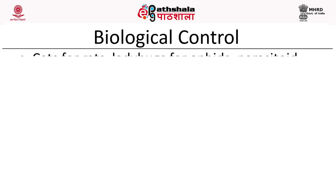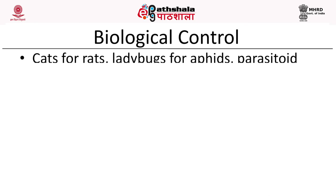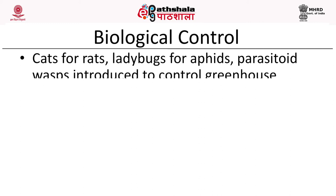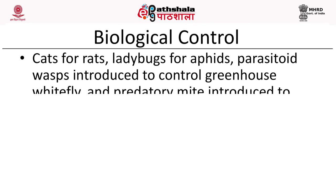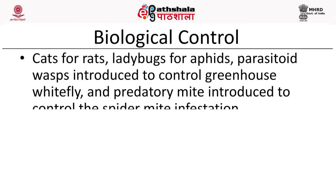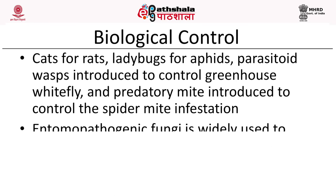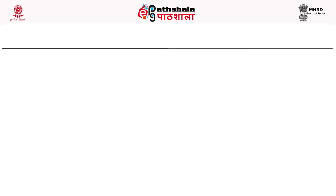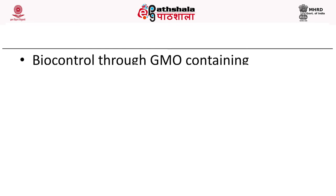Biological control is another area where we are highly dependent upon biodiversity. Examples include using cats to control rat infestation, ladybugs for aphids, parasitoid wasps introduced to control greenhouse whitefly, and predatory mites introduced to control spider mite infestation. Other examples involving microorganisms include entomopathogenic fungi widely used to control pest aphids, and baculoviruses to control various insect pests. Biocontrol through GMOs containing responsible genes is also a viable strategy.